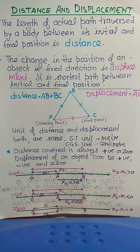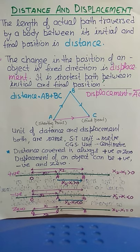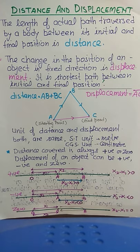Now I am going to discuss two topics: distance and displacement. Distance is the path length covered by the object in a given time — however much path is covered, that length is your distance.